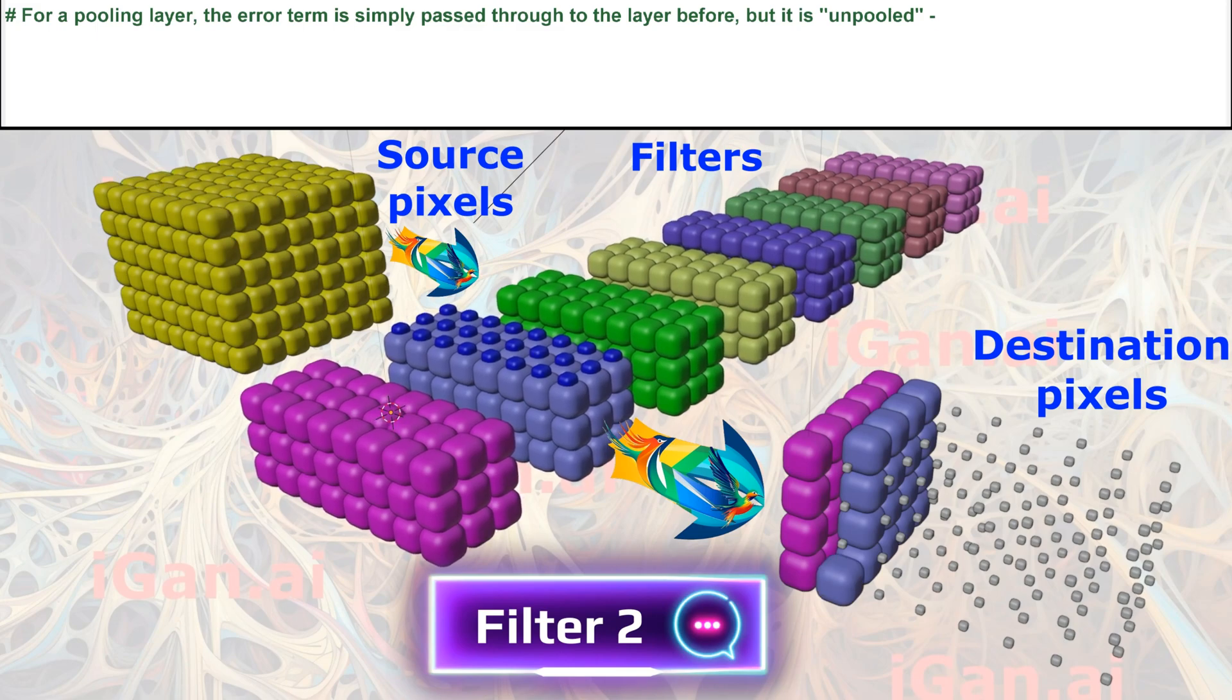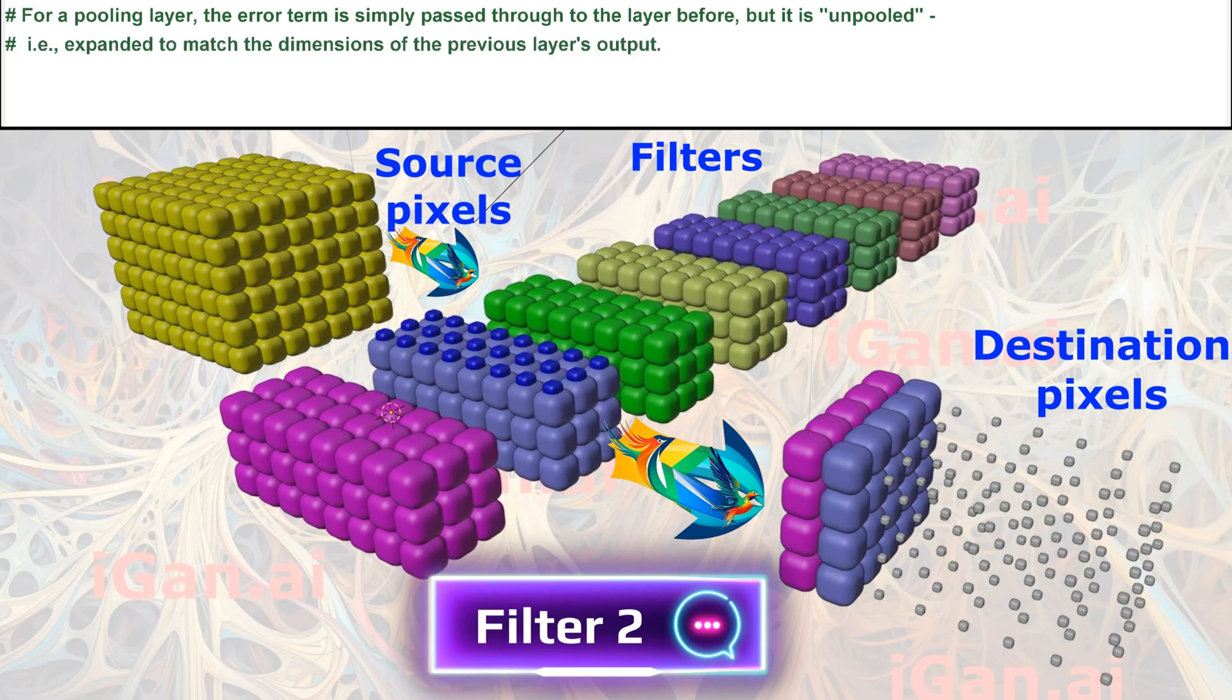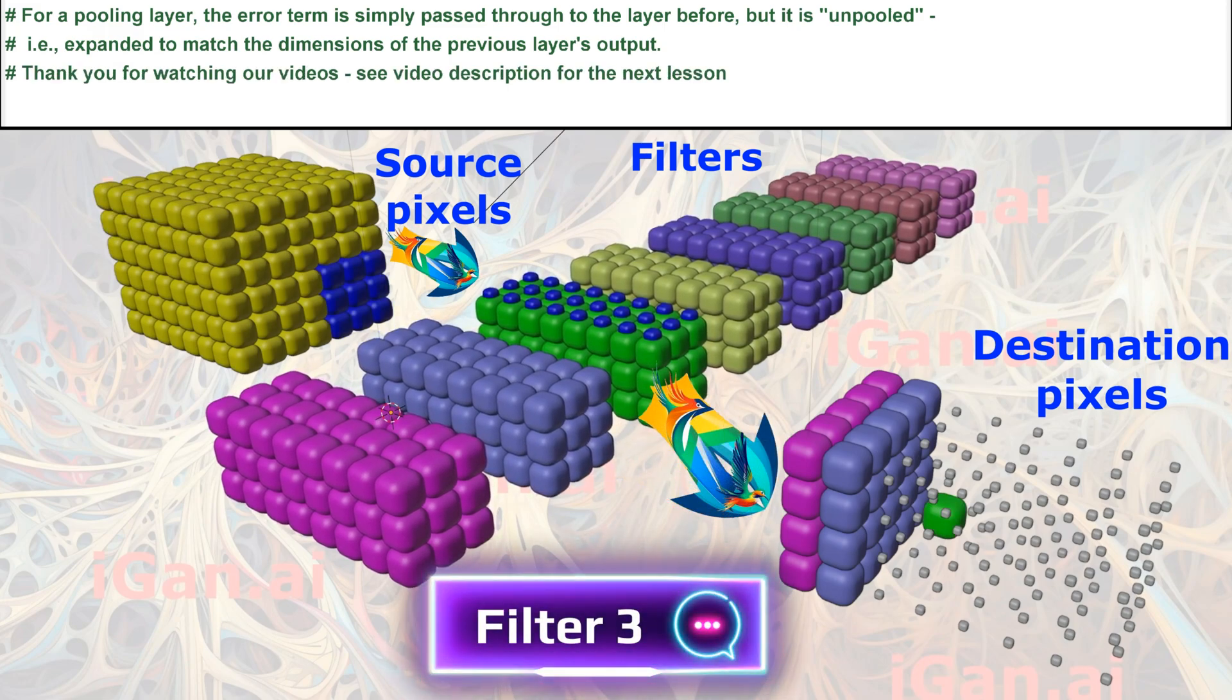For a pooling layer, the error term is simply passed through to the layer before, but it is unpooled, i.e., expanded to match the dimensions of the previous layer's output.